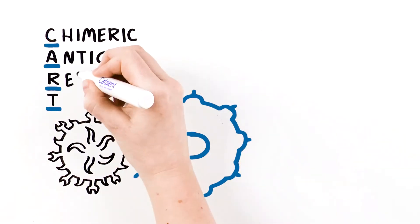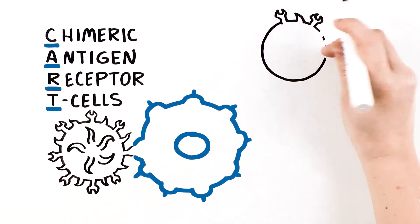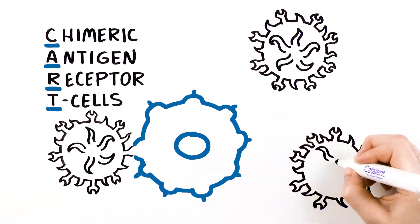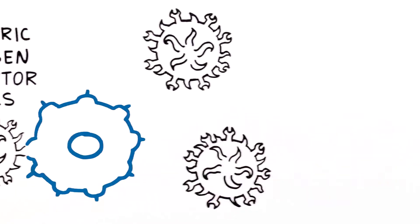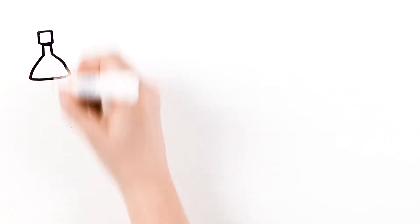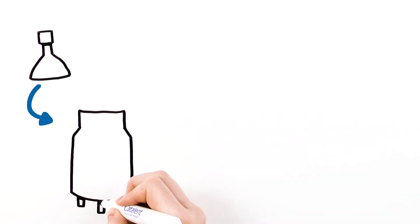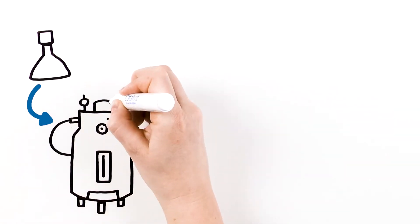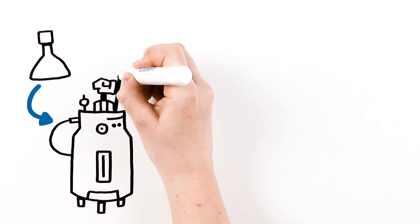These chimeric antigen receptor T-cells are scaled in manufacturing facilities to provide enough material to treat patients. CAR-T cells require expertise to produce at scale. Innovators often look to manufacturing experts for process development and scale-up or scale-out process optimizations.